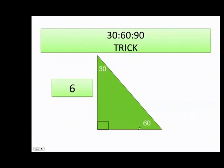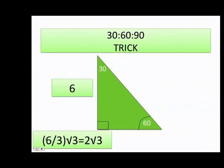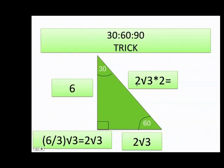Now they give me the 60-degree value as 6. Using the trick: divide the whole number by 3, then add the square root of 3. I divide 6 by 3, which gives me 2, then add √3. Therefore the value of x — the 30-degree side — is 2 times the square root of 3. Moreover, the hypotenuse is 2 times x: since x is 2√3, then 2 times 2 gives me 4 times the square root of 3.